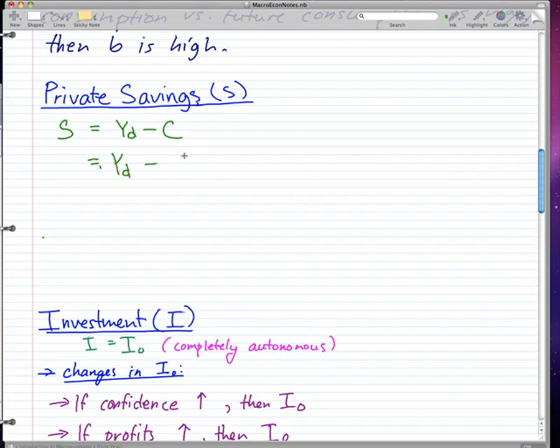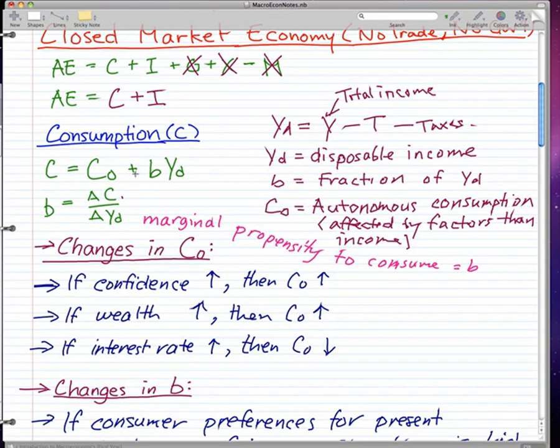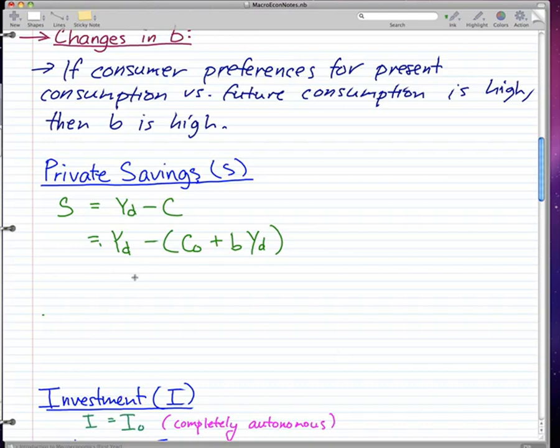Remember that we can expand C to make it C naught plus b times Yd. This was from our last video. So if we further expand this, then we could do Yd minus C naught minus b times Yd.